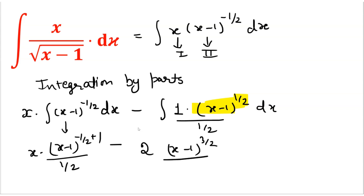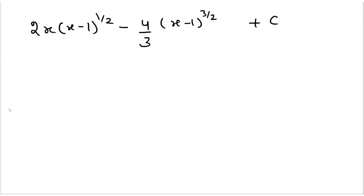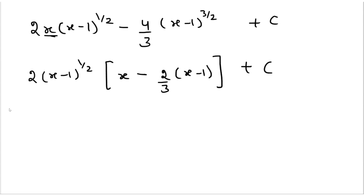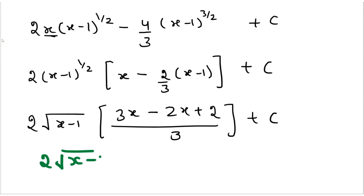Again, integrating this function gives x minus 1 raised to power 3 by 2 upon 3 by 2, plus integration constant c. Simplifying: 2 into x into x minus 1 raised to power 1 by 2, minus 4 by 3 into x minus 1 raised to power 3 by 2, plus c. Taking 2 into x minus 1 raised to power 1 by 2 as common, the final answer is 2 into x minus 1 raised to 1 by 2, into x plus 2 by 3 into x minus 1, plus integration constant c.